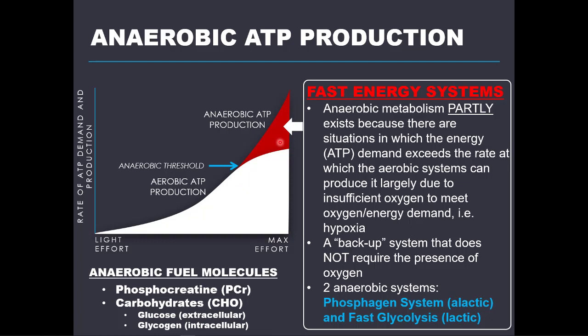The anaerobic system is active when oxygen availability does not meet oxygen demand for the aerobic system to have enough ATP-producing power to meet the ATP demand. In other words, the anaerobic system is active when muscles are under a hypoxic state, which we discussed in the prior slide.